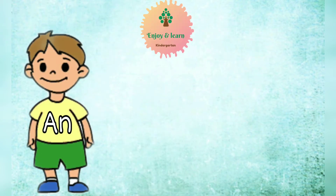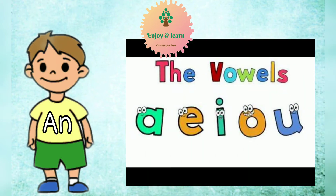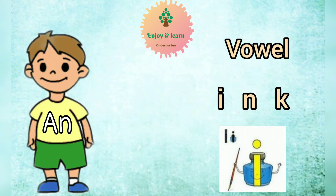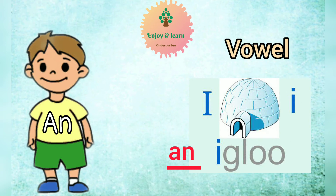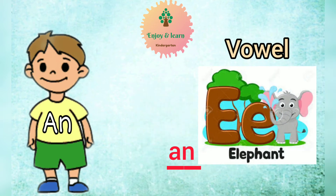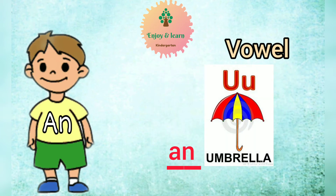The younger article brother 'an' is used before a noun starting with a vowel sound, that is a, e, i, o, u. For example, 'ink' — I is the vowel in ink, so before it we will use the article 'an': an ink, an igloo, an elephant, an umbrella, an octopus.